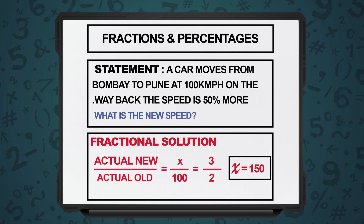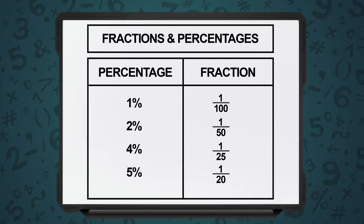Let us review some of the most commonly used fractions and percentages: 1% is 1 upon 100, 2% is 1 upon 50, 4% is 1 upon 25, and so on and so forth. Thank you.